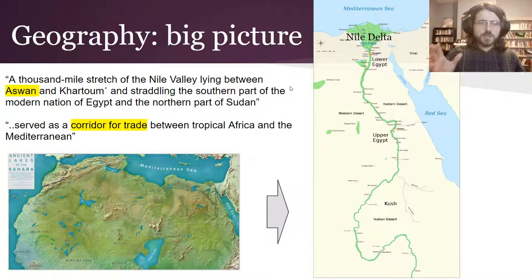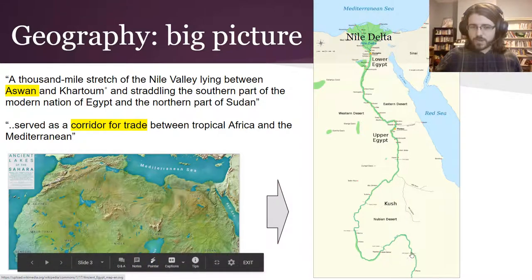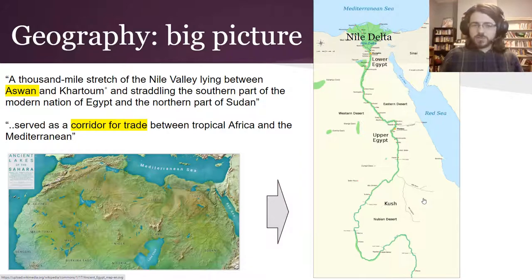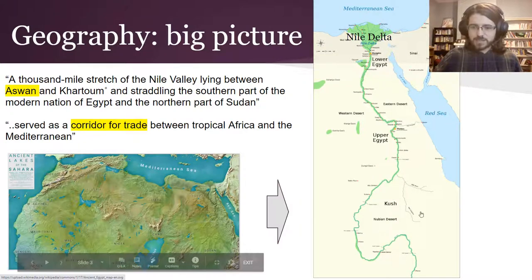Here's the big picture. There's this thousand-mile stretch of the Nile Valley that lies between Aswan and Khartoum — basically between here and down there — and that is the area that we would call Nubia. There are a bunch of different kingdoms that pop up in that area. Egypt is the up-here bits, and Nubia is the down-here bits.